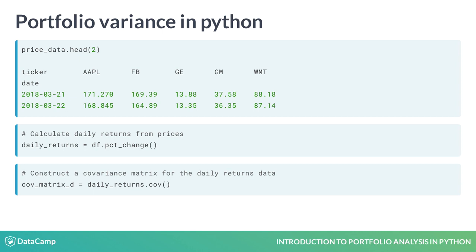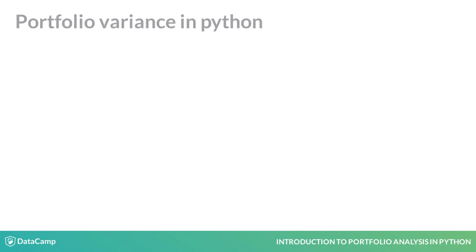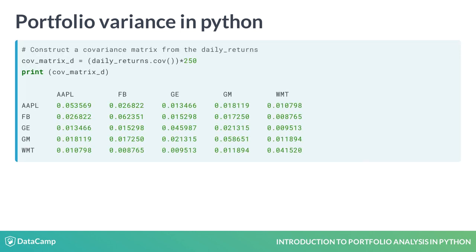So now we almost have all ingredients to calculate the portfolio variance. We need to take a short additional step, which is to annualize our volatility by multiplying it with 250, which is the amount of trading days in a year. Don't worry about it for now — you'll learn more about this in the next chapter. Last, we need the weights of our portfolio. We have 5 stocks here, so let's create a simple equal-weighted portfolio.